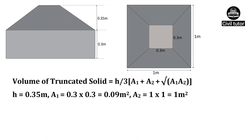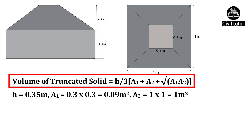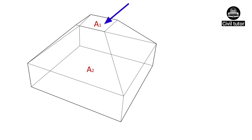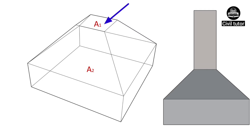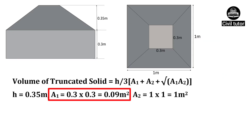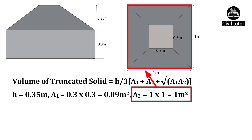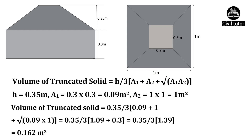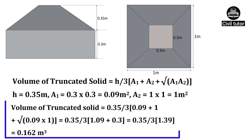Volume of truncated solid is calculated using the formula h/3 × (a1 + a2 + √(a1·a2)), where h is the height of the truncated portion, given as 0.35 m. a1 is the area of the top portion of the truncated solid, or the area of the cross-section of the column to be cast over this footing, given as 0.3 × 0.3 = 0.09 m². a2 is the area of the base of the truncated portion, equal to 1 m². On substituting these values, the volume of the truncated solid equals 0.162 m³.